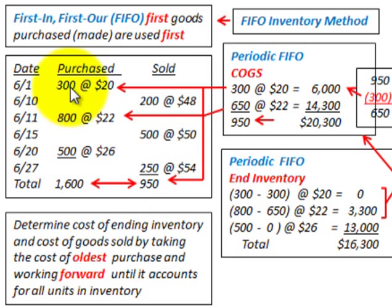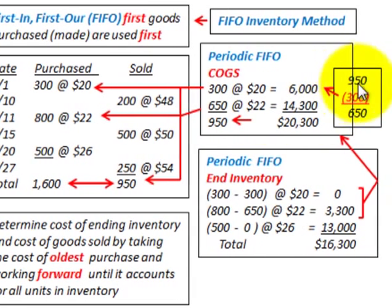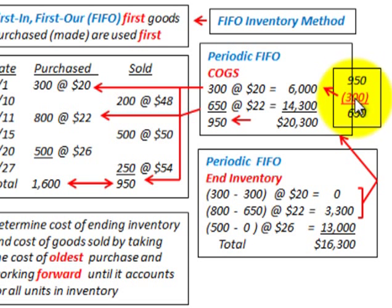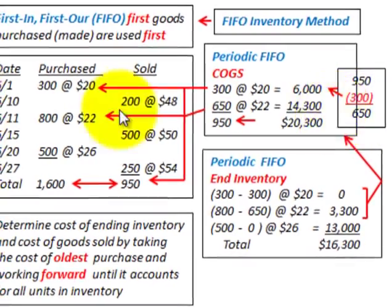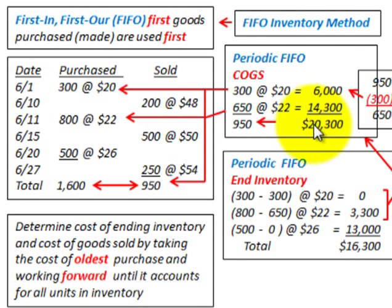For the 950 units sold, the oldest inventory is 300 units at $20 each, giving us $6,000 for cost of goods sold. The next oldest quantity is 800 units, but we only need 650 more to account for the remaining units (950 minus 300). So 650 units at $22 each gives us $14,300. The total cost of goods sold for the 950 units is $20,300.